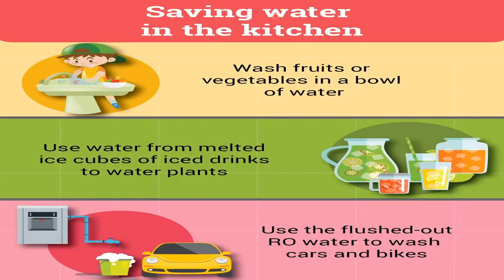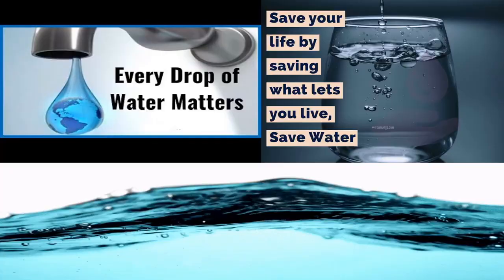Saving water in the kitchen: wash fruits or vegetables in a bowl of water, use water from melted ice cubes to water plants, and use the flushed-out RO water to wash cars and bikes. Every drop of water matters, so save your life by saving what lets you live. Save water.